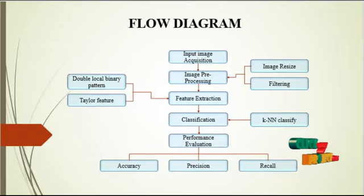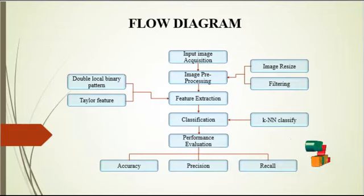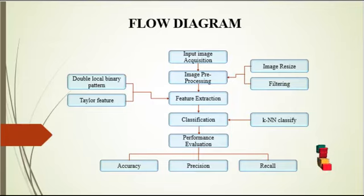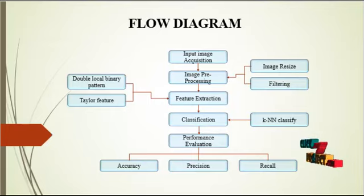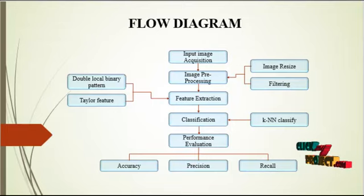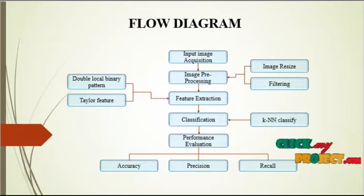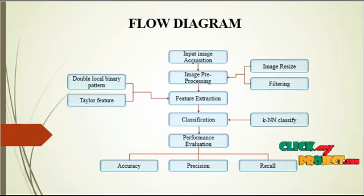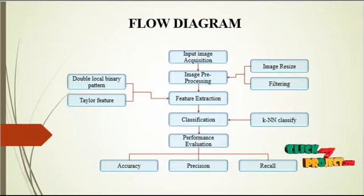After the filtering operations, we perform feature extraction — this is the main step to classify facial expressions. For that, we perform the double local binary pattern and Taylor features for the feature extraction process. In the double local binary pattern, we extract binary information from the images. The standard local binary pattern gets larger bits, whereas the double local binary pattern is optimized and gets lower binary bits. The Taylor features are also extracted, which give spatial information of the image. By combining these two features, we perform the complete feature extraction operation.